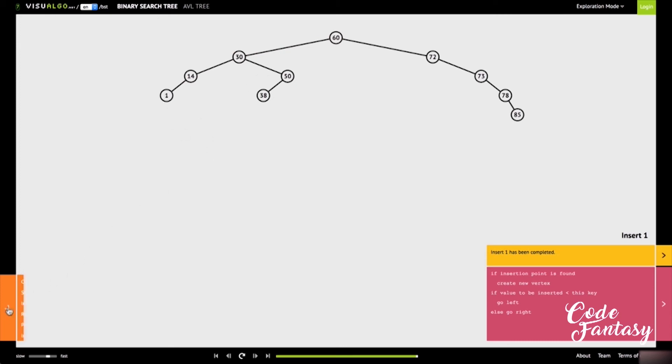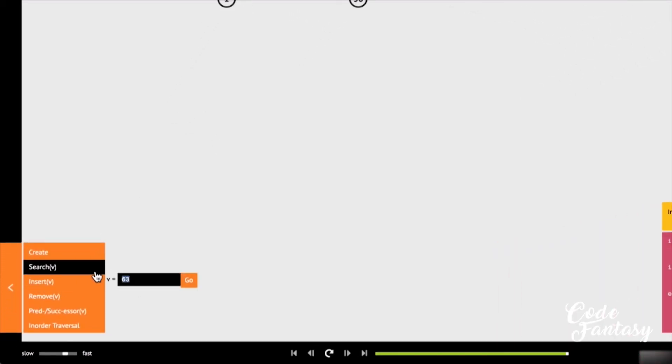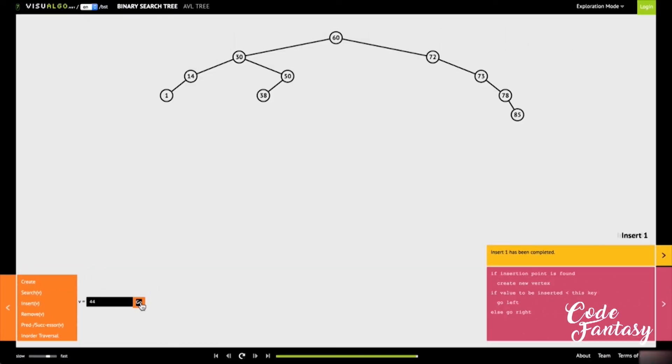What if I want to insert perhaps number 44 this time around? If I hit go, it traverses, figures out where 44 should go, and places it down here. So we're always traversing and figuring out using O(log n) where we should place the item.